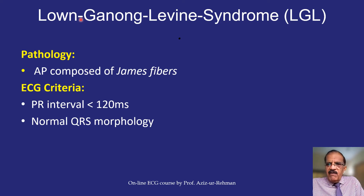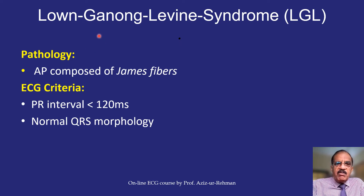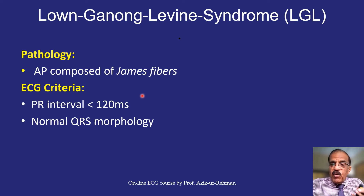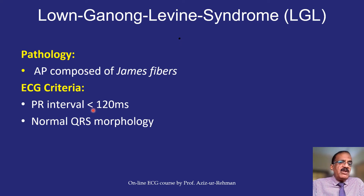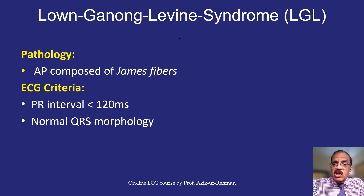The second condition is Lown-Ganong-Levine syndrome. The pathology is an anomalous pathway composed of James fibers within the AV node. The ECG criterion is simply a short PR interval; otherwise the ECG is absolutely normal. This diagnosis is usually not definite unless the patient has a history of supraventricular tachycardia, since a short PR interval alone could be a normal finding. LGL is labeled when PR interval is shorter than three small squares.